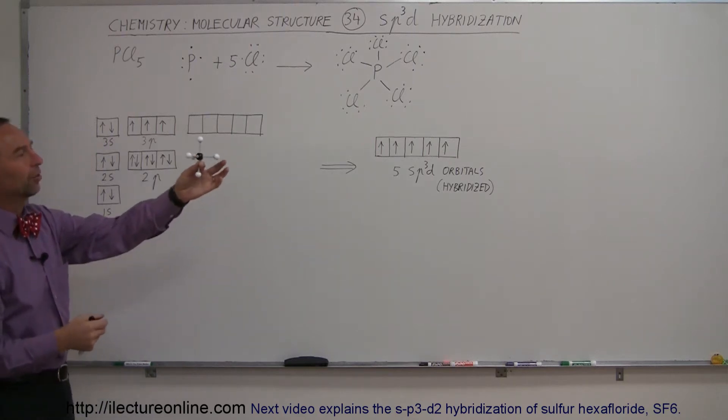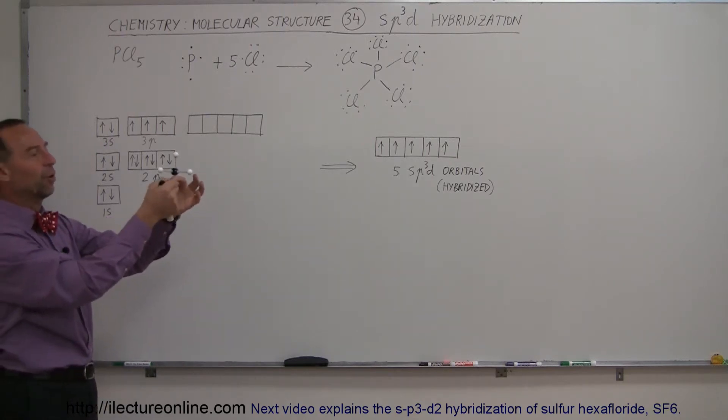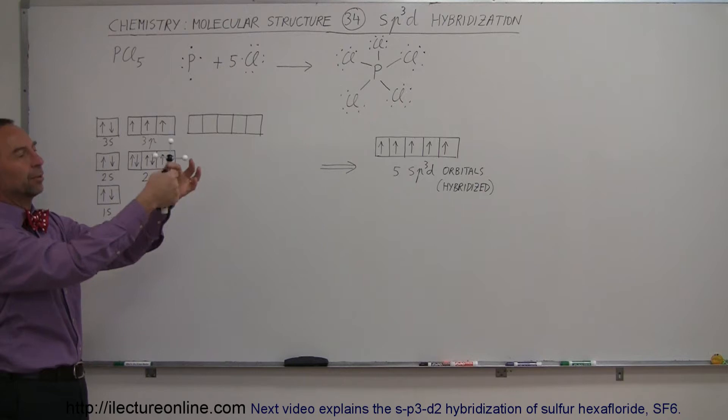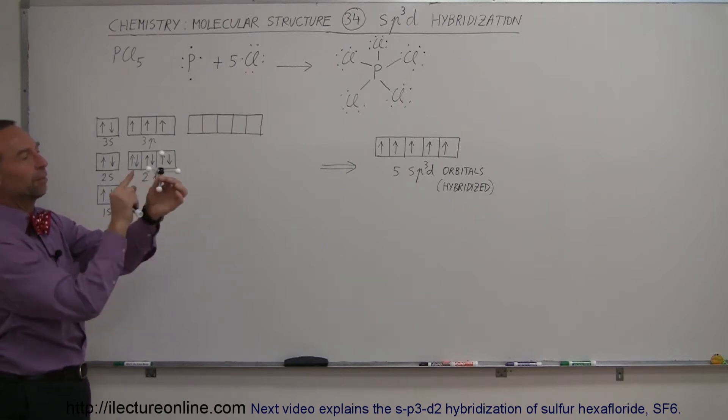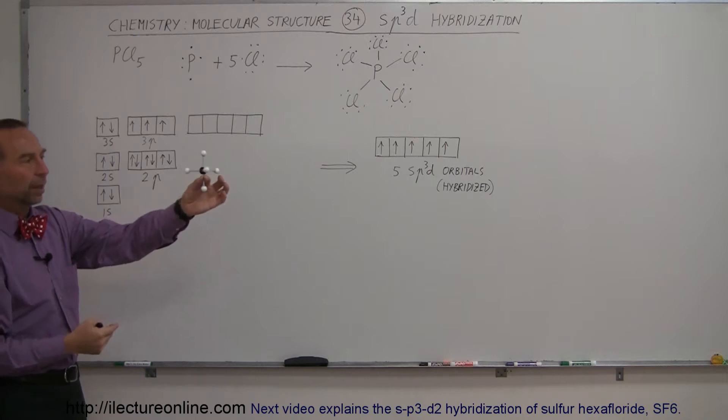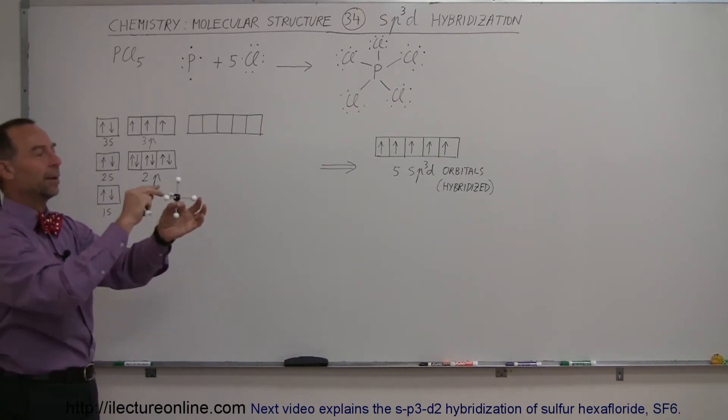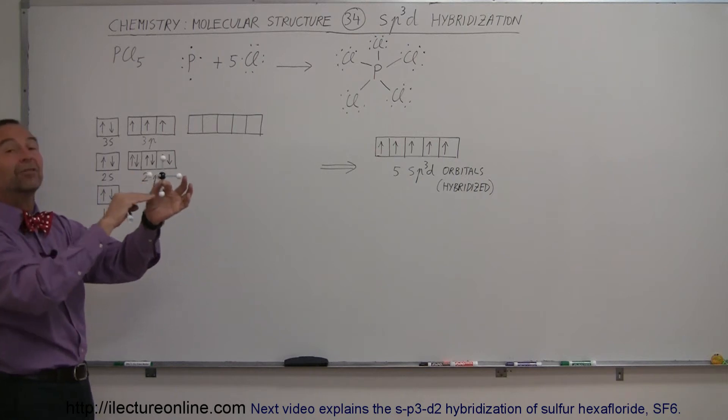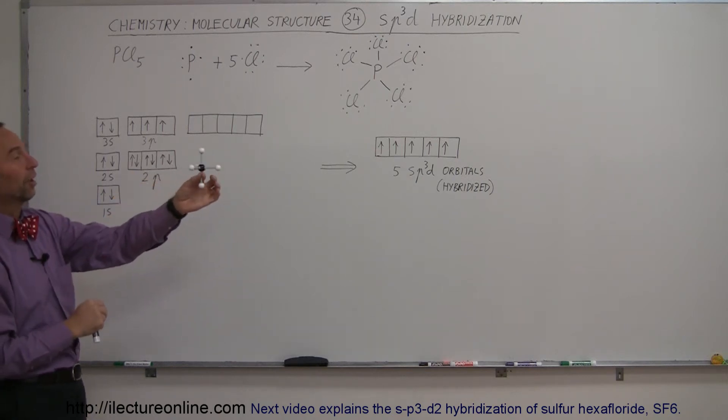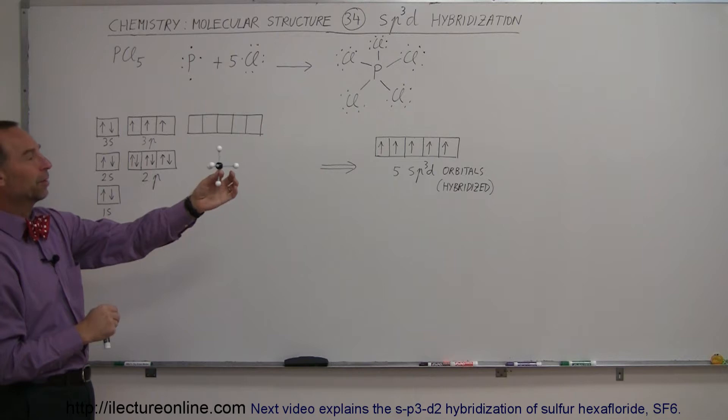Here's a model of what that looks like. Notice that we'll have one chlorine up here, one chlorine down here, and then the three in the plane that are perpendicular to the up and down location. This is trigonal, there's three of them in a plane, and now we have these two pyramids that are base to base, so this is called a trigonal bipyramidal shape.